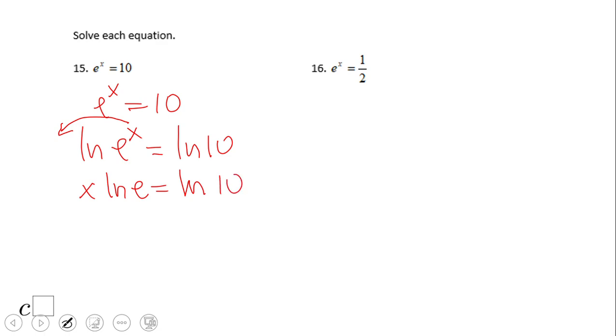And we have x natural log of e equals natural log of 10. But this natural log of e is nothing else than one. So we have x equals natural log of 10. This is the solution of this problem.